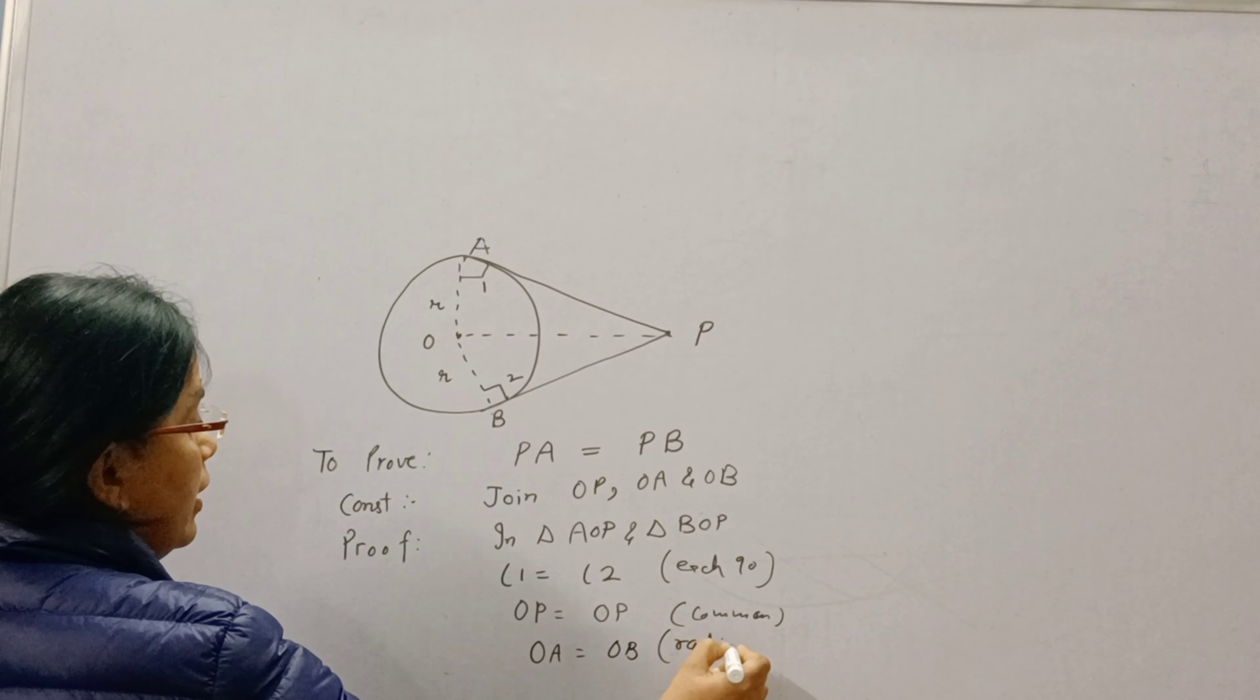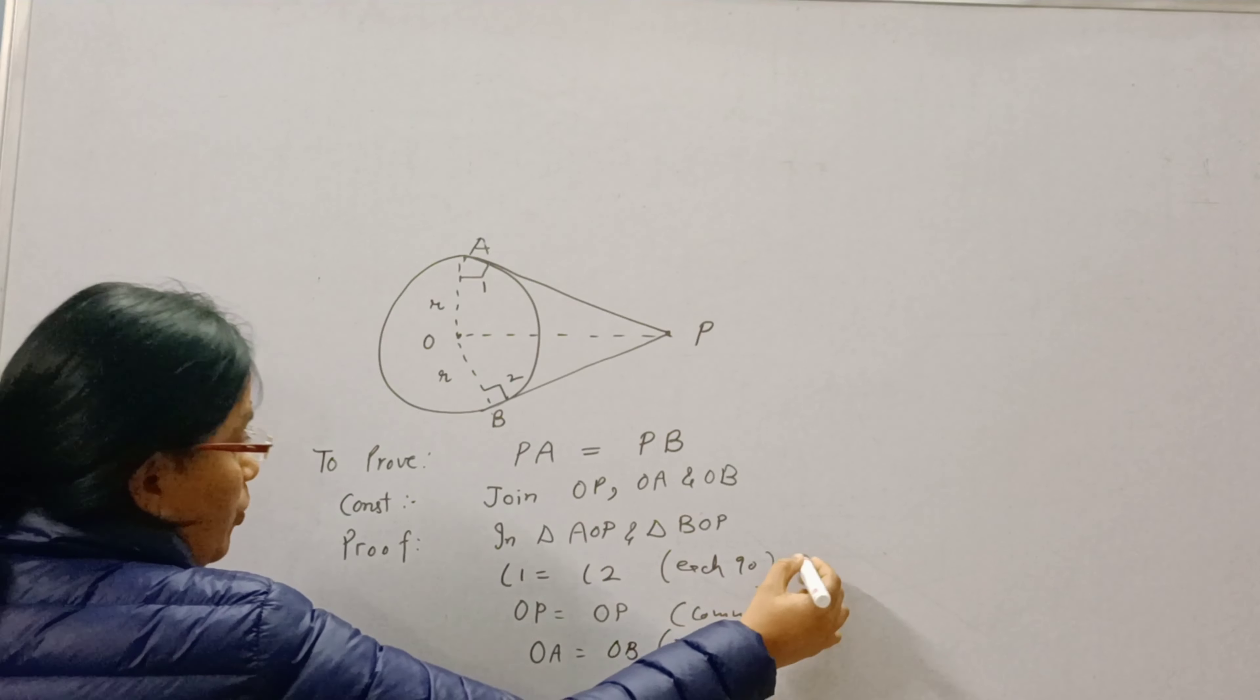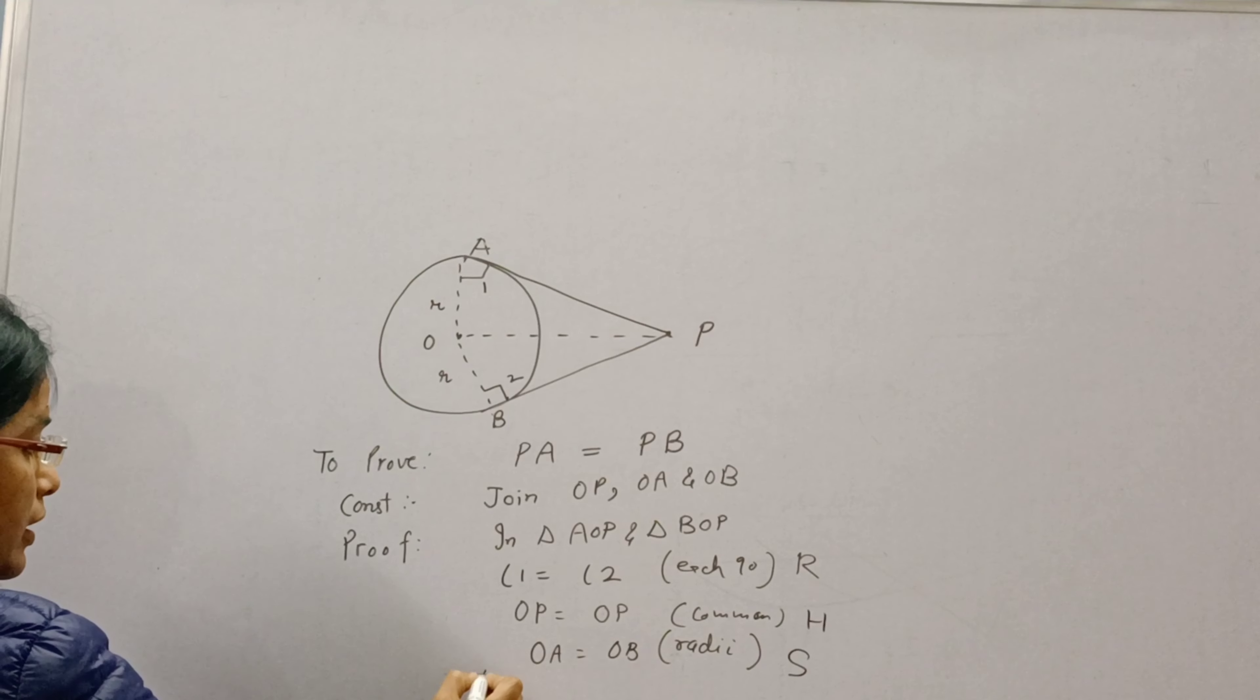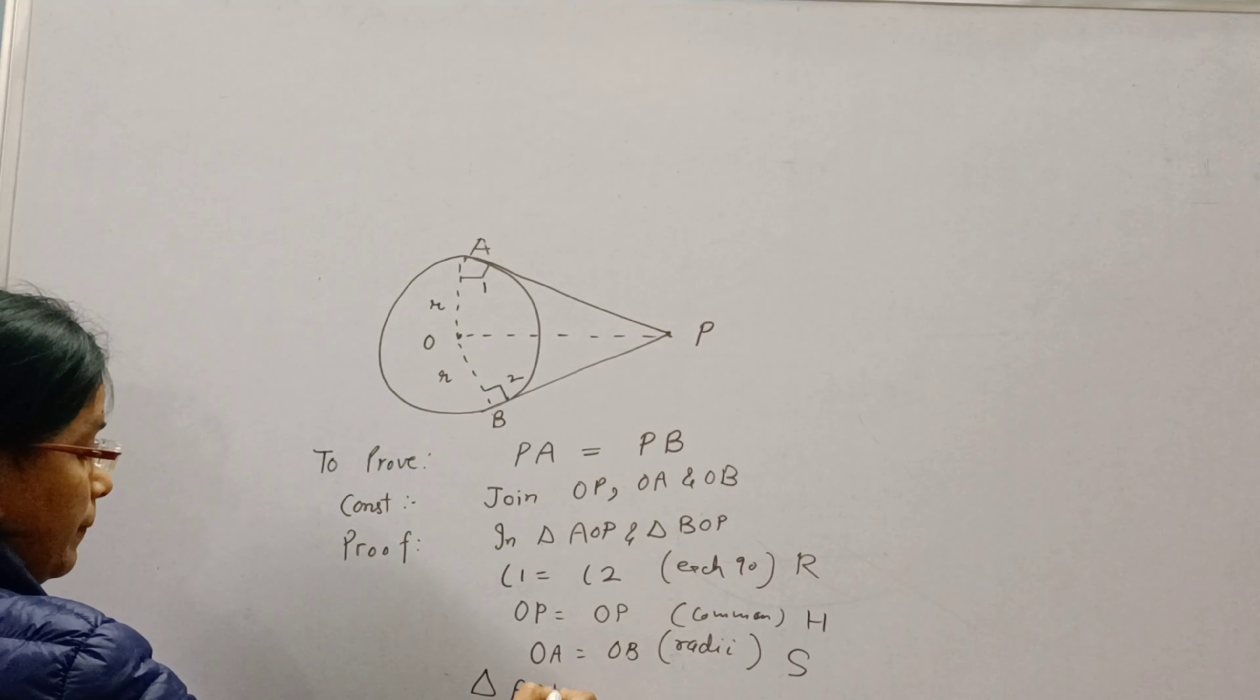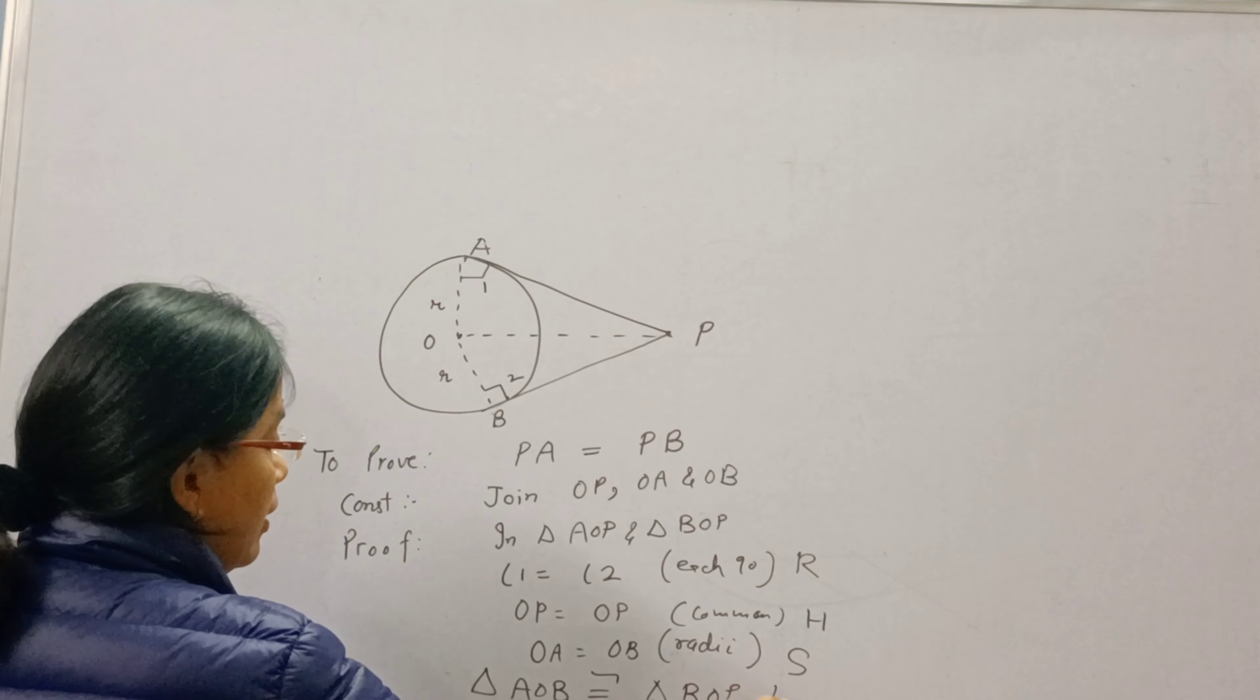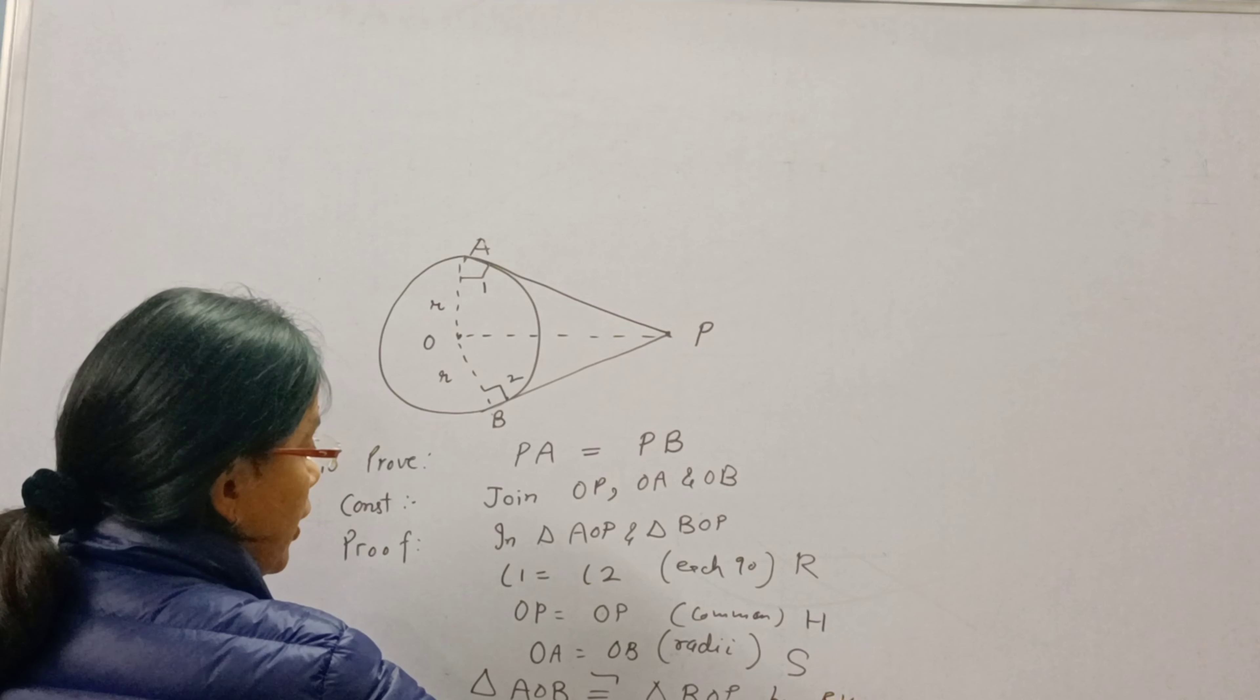Now, right angle, then hypotenuse, then side. So, we can say triangle AOP is congruent to triangle BOP by RHS.